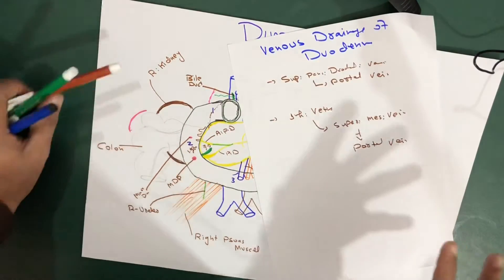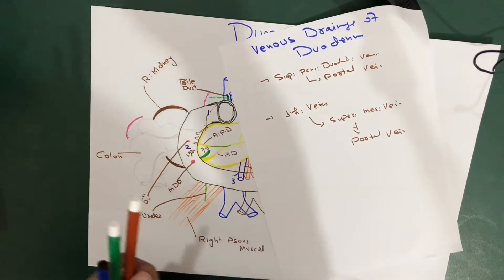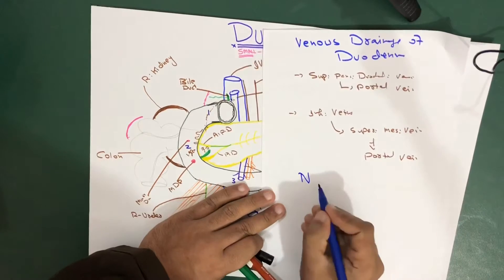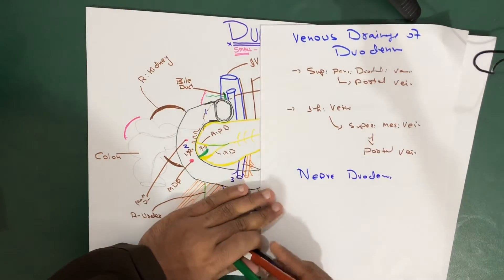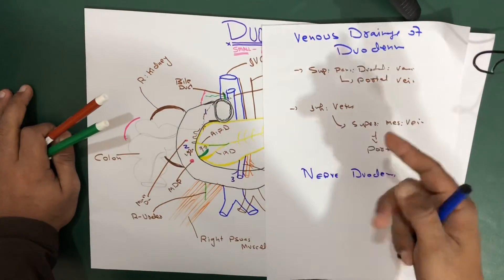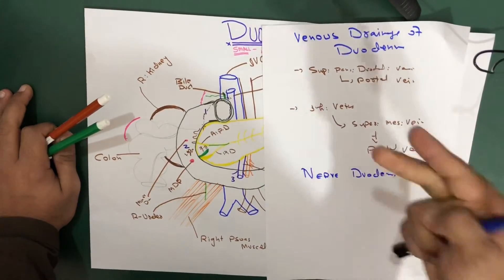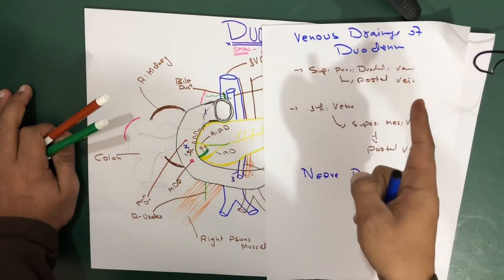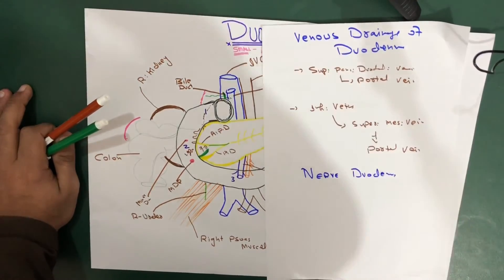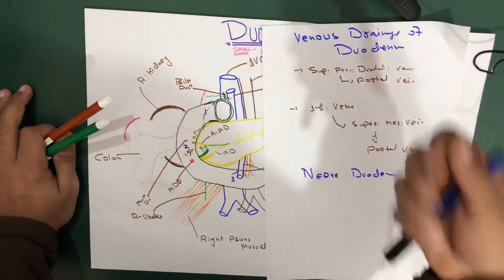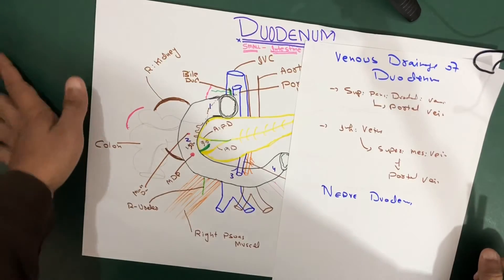Now let's talk about the nerve supply. There will be a detailed video on this, but here you have to remember the key points. The nerve supply of the duodenum is derived from your sympathetic and parasympathetic systems, specifically your vagus nerves. They come from the celiac plexus and the superior mesenteric plexus. Both of these plexuses give off parasympathetic and sympathetic branches that supply your duodenum.